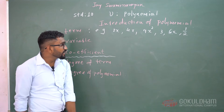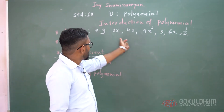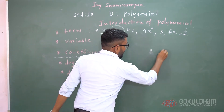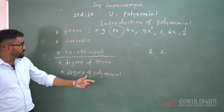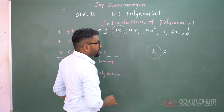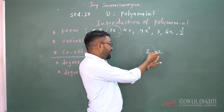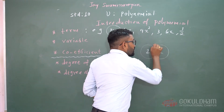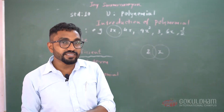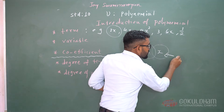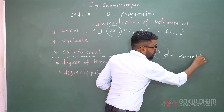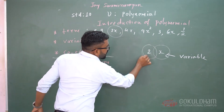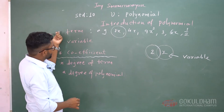In terms, there are 2 main important parts. Suppose we take the first example, 2x. In 2x, x is multiplied by 2, means x is 2 times. Here 2 is a digit and x is a letter of the alphabet, meaning x is also known as a variable. And 2 is the coefficient.